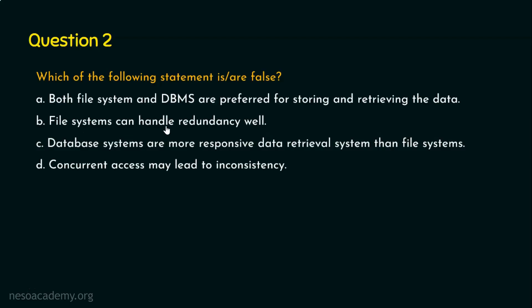Coming to option B: file systems can handle redundancy well — and this is false. This is one of the drawbacks that we have in file systems, and that is why we are preferring DBMS. So option B is false, and we can confirm that the right answer is option B. Database systems are more responsive data retrieval system than file systems — this is also true. Concurrent access may lead to inconsistency — this is also true, but concurrent access in databases is handled well. In general, concurrent access may lead to inconsistency if it is not properly handled. So the right answer is option B: file systems can handle redundancy well, which is false.